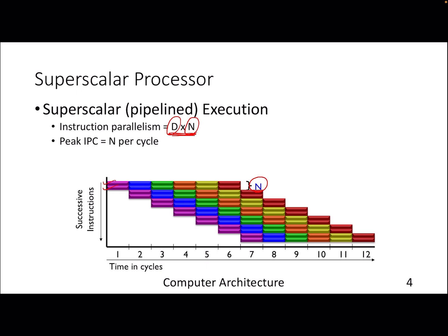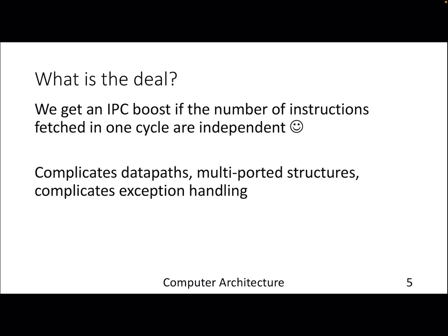Theoretically, per cycle we can finish n instructions in the ideal world — that is the peak IPC we can expect from a superscalar processor. The basic difference is that you are fetching multiple instructions in one cycle instead of just one instruction, to get an IPC boost so our programs will run faster. This only works out if the instructions fetched are independent — no data dependence or control dependence.